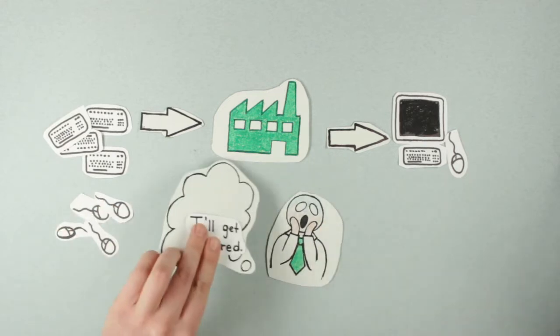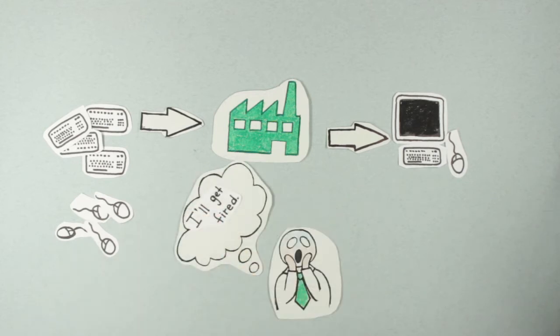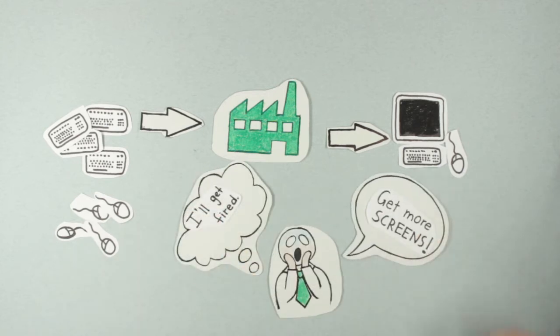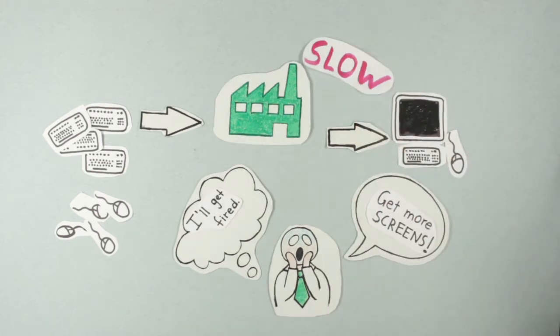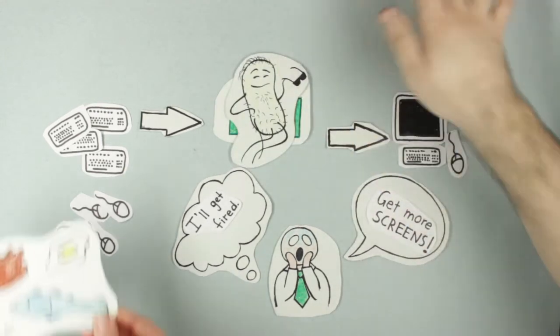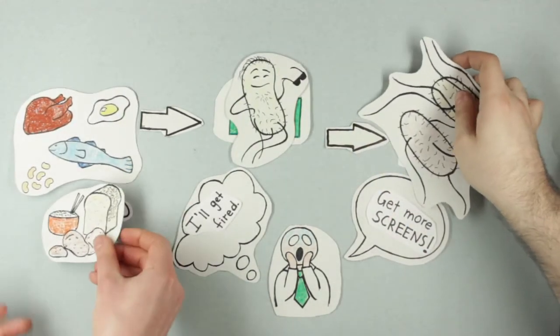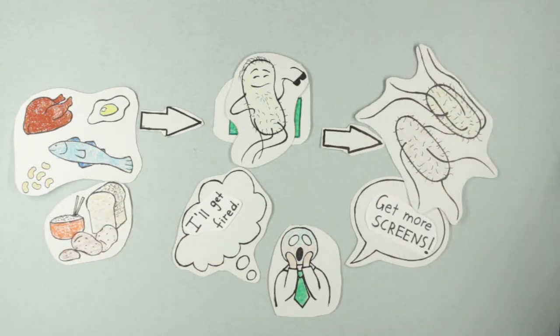So the manager doesn't buy more keyboards. Instead, they slow down the production of keyboards until more LCD screens are purchased. Bacteria, too, are specialized factories that can produce more of themselves using the nutrients from the environment.